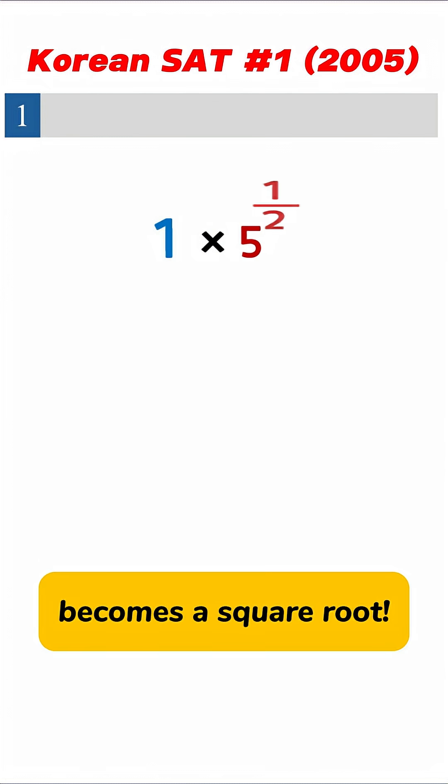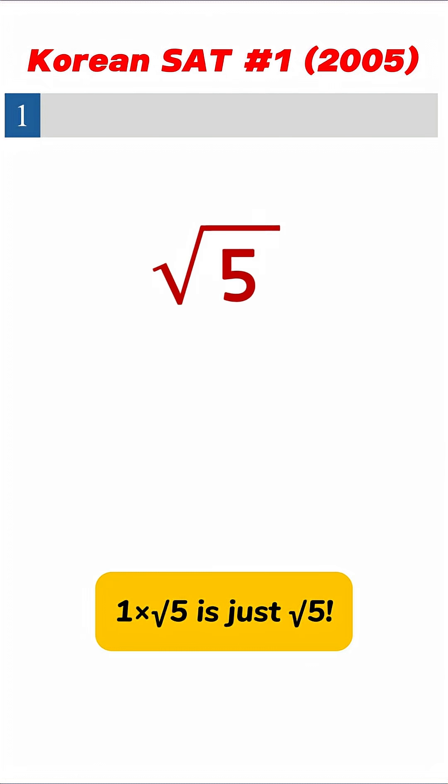Anything to the power of 1 over 2 becomes the square root. Therefore, 1 times the square root of 5 is just the square root of 5.